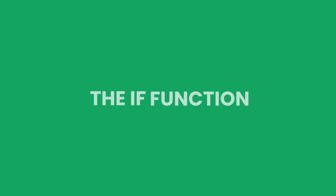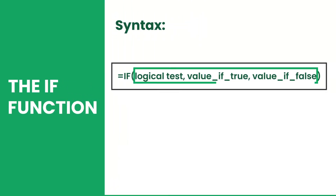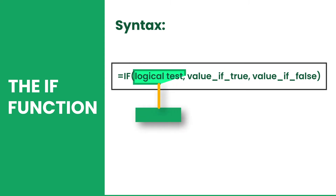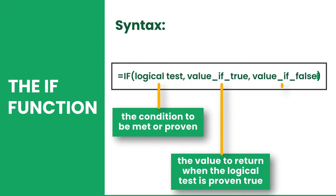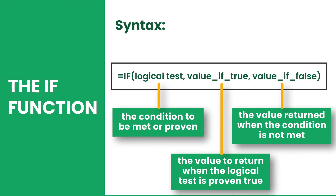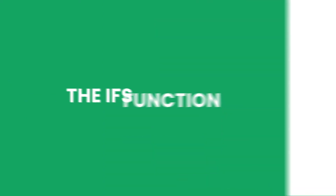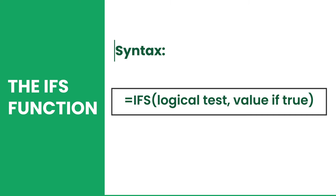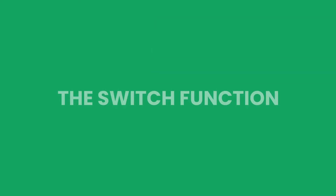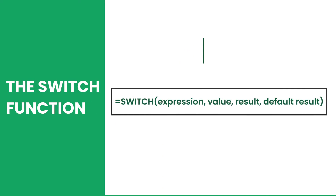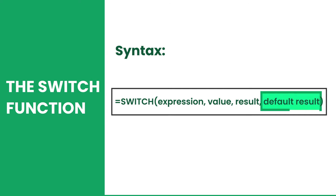To start, let's discuss their syntaxes. The IF function runs on three arguments: the logical test, value if true, and value if false. Like IF, the IFS function also has the logical test and the value if true. The SWITCH has four arguments: the expression, value, result, and default result.